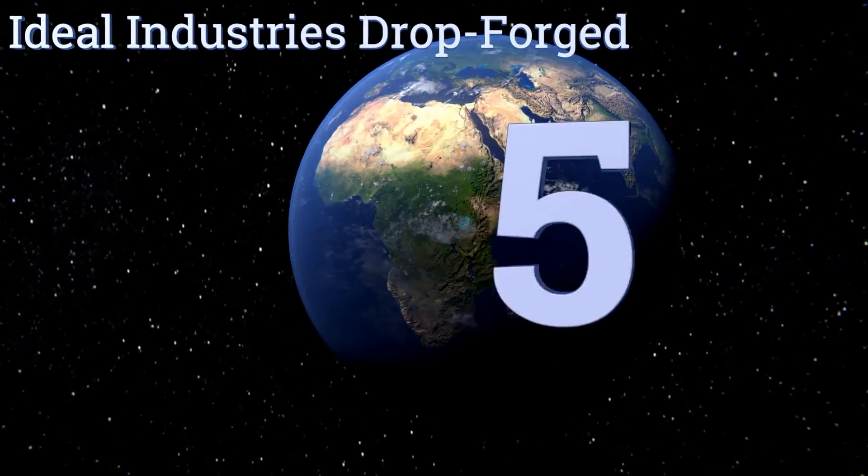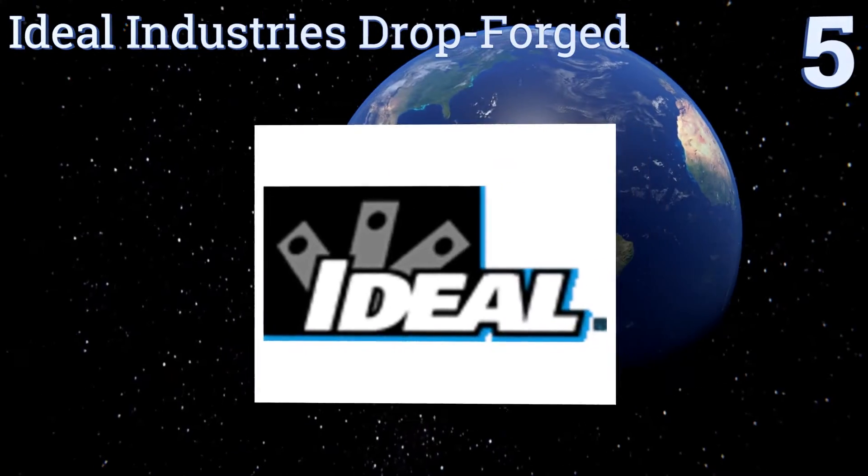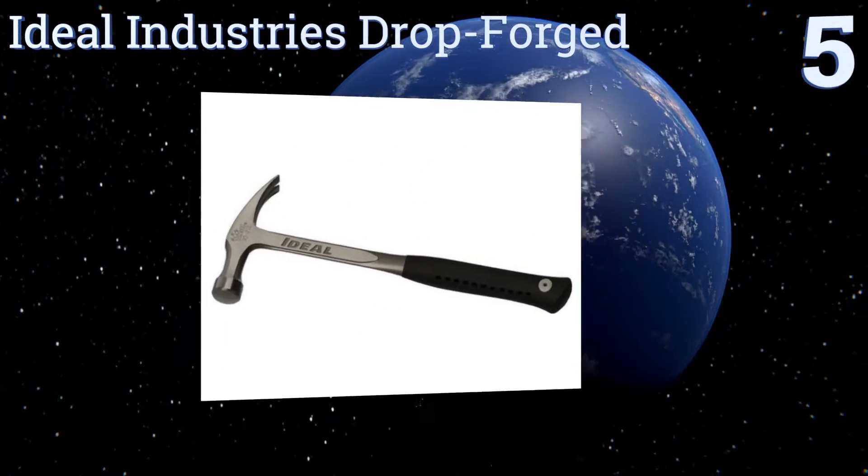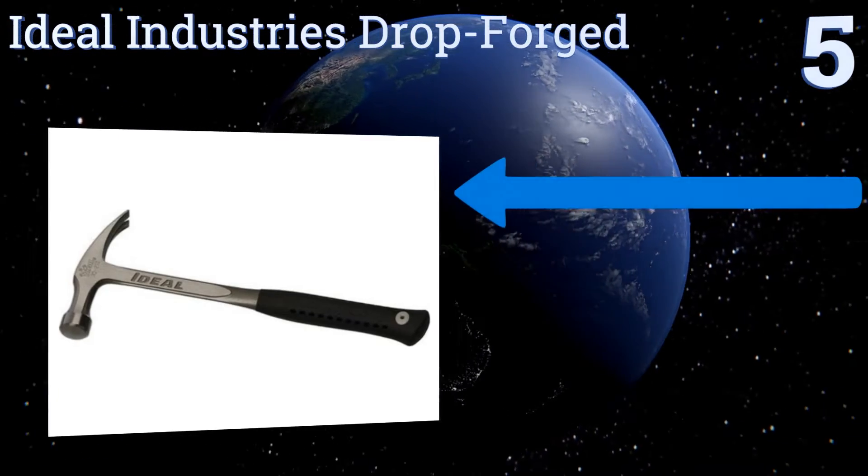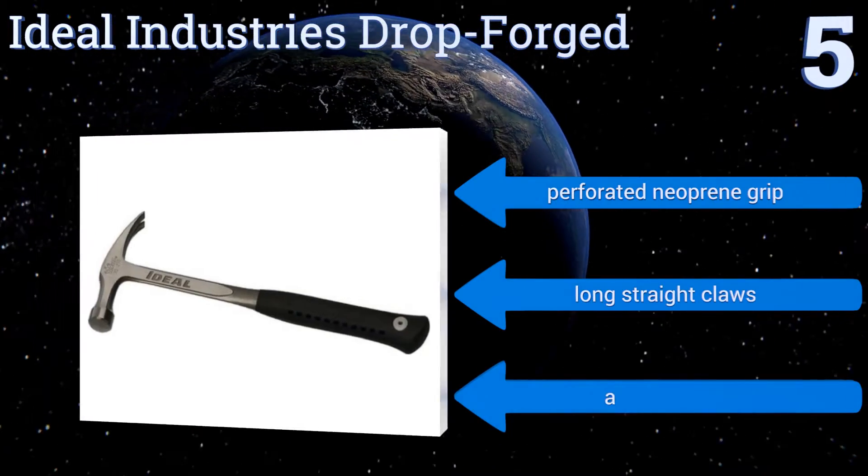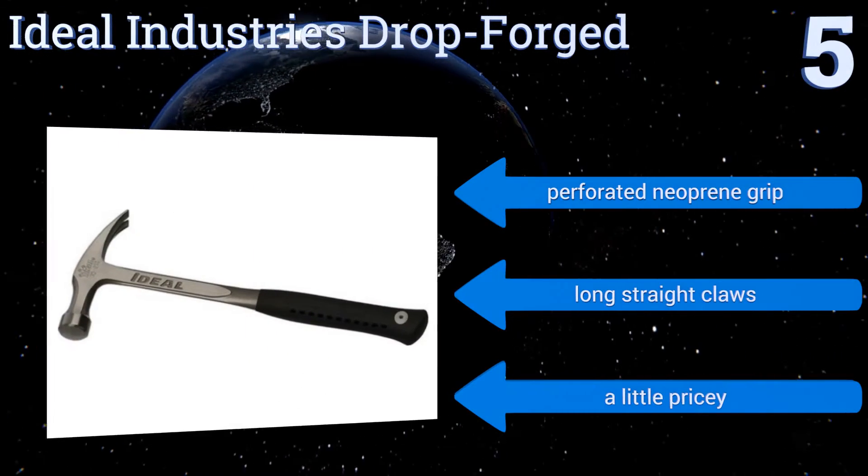At number five, the Ideal Industries drop forged is a sleek, well-balanced unit with a tempered steel head that makes pounding nails feel like a walk in the park. You don't have to worry about damage as you bang away either, since its vapor blasted tip prevents plate chipping. It includes a perforated neoprene grip and long straight claws, but it is a little pricey.